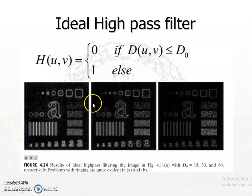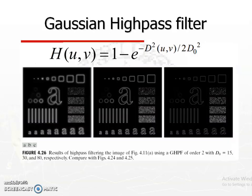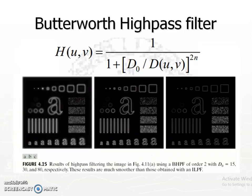Looking at the ideal high-pass filter with different cut-off frequencies: as the cut-off frequency increases, more and more low frequencies are removed, causing more sharpening of edges. The Gaussian high-pass filter shows no ringing effect, and as the cut-off frequency increases, more sharpening occurs. The same behavior is observed for the Butterworth high-pass filter case.